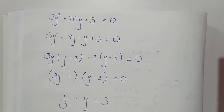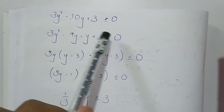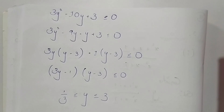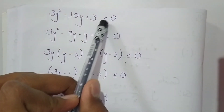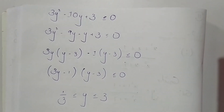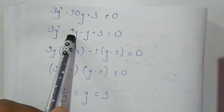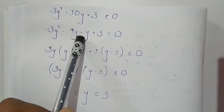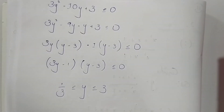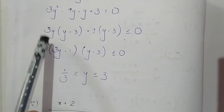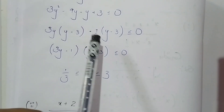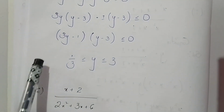We now solve 3y² - 10y + 3 ≤ 0 by factoring. We can write -10y as -9y - y, giving 3y² - 9y - y + 3 ≤ 0. Using the factoring method: taking 3y common from the first two terms gives (y - 3), and taking -1 common from the last two terms also gives (y - 3). So we get (3y - 1)(y - 3) ≤ 0.